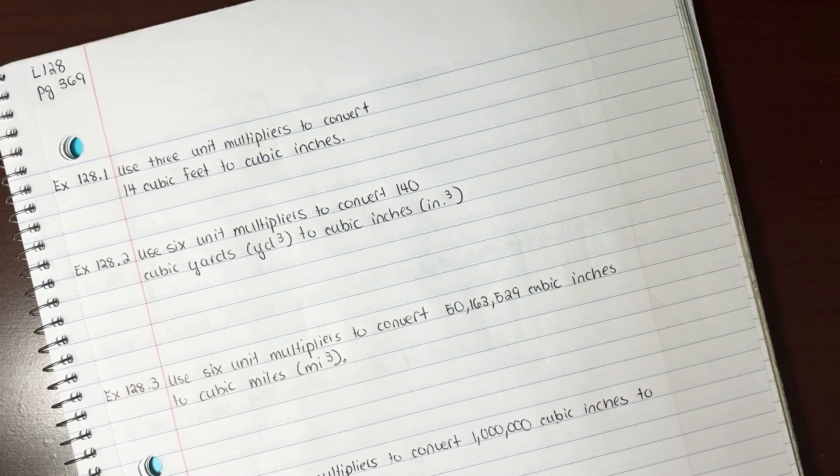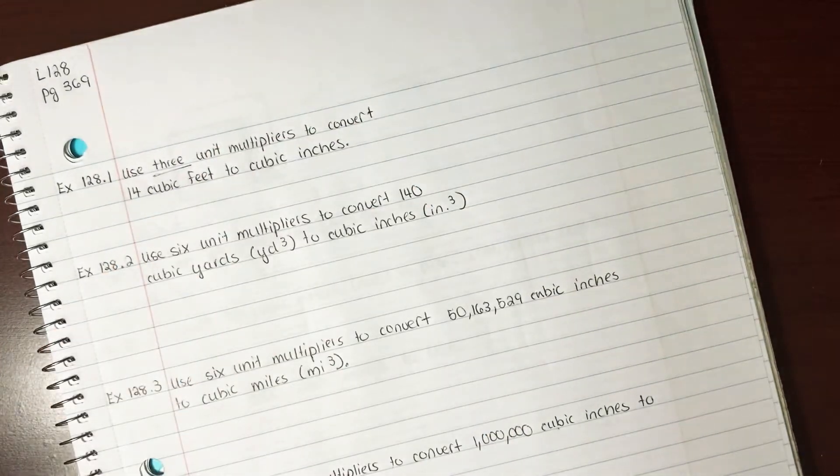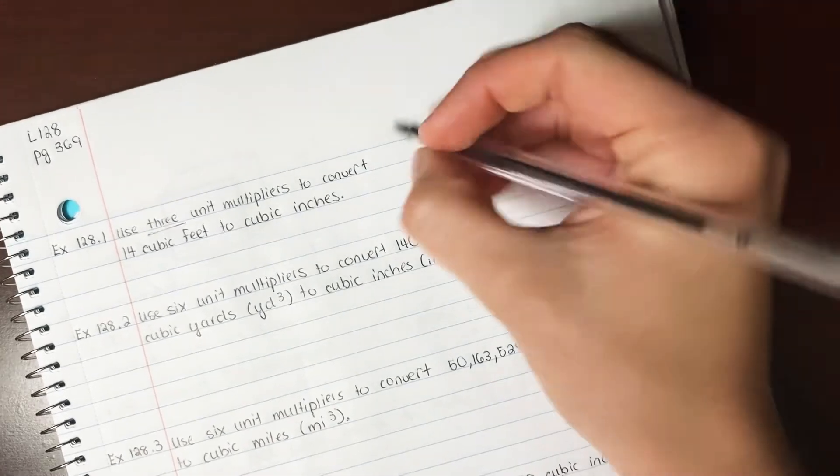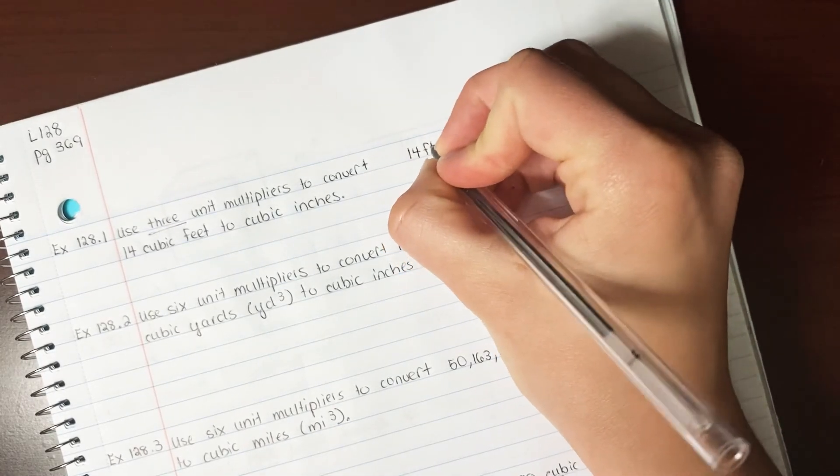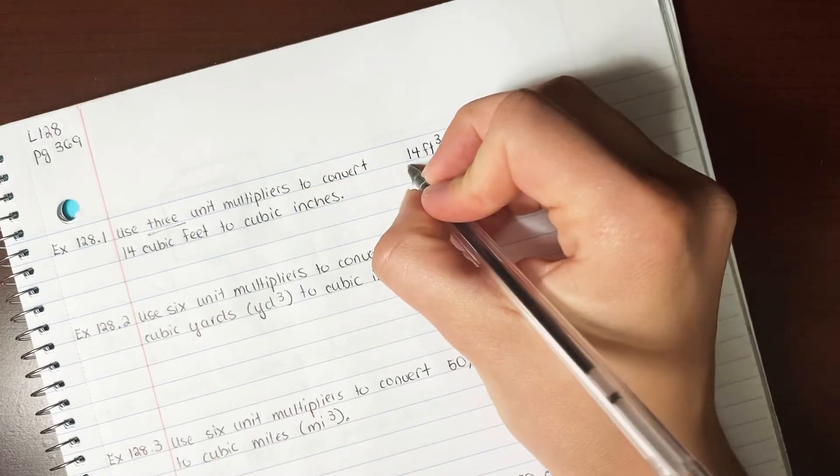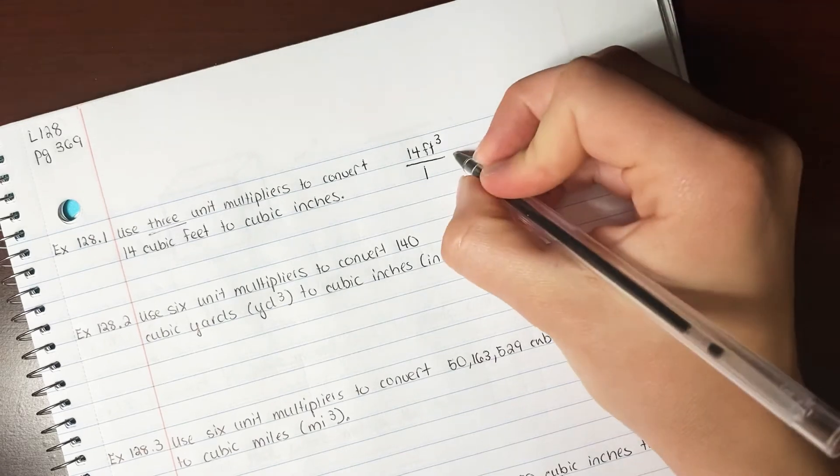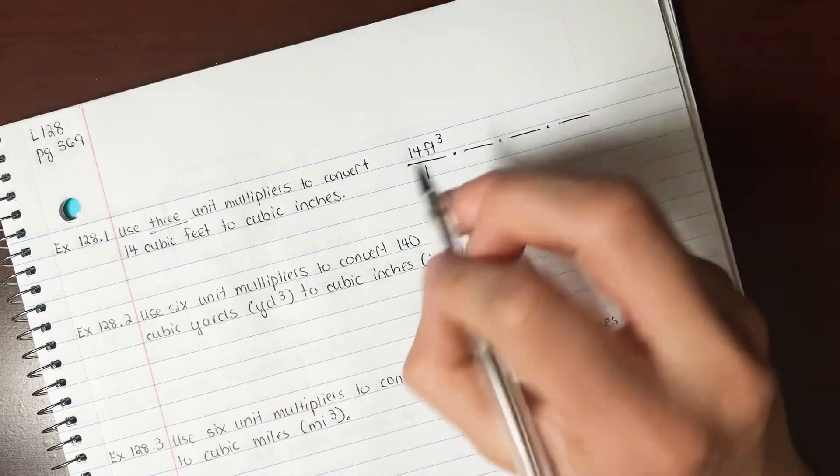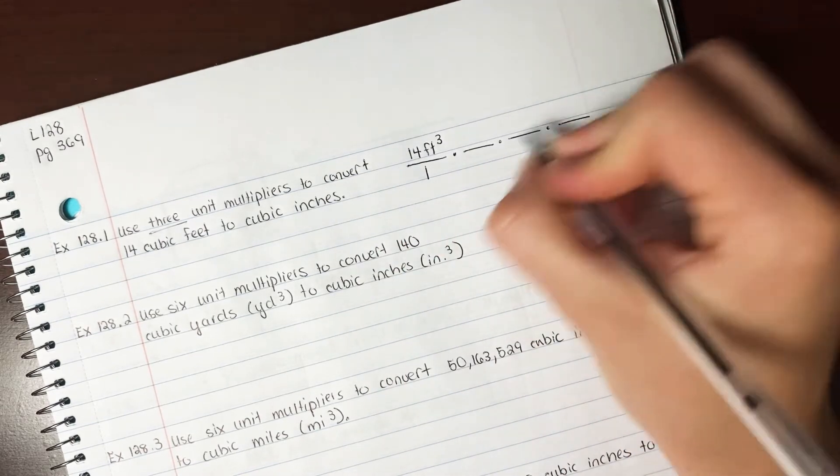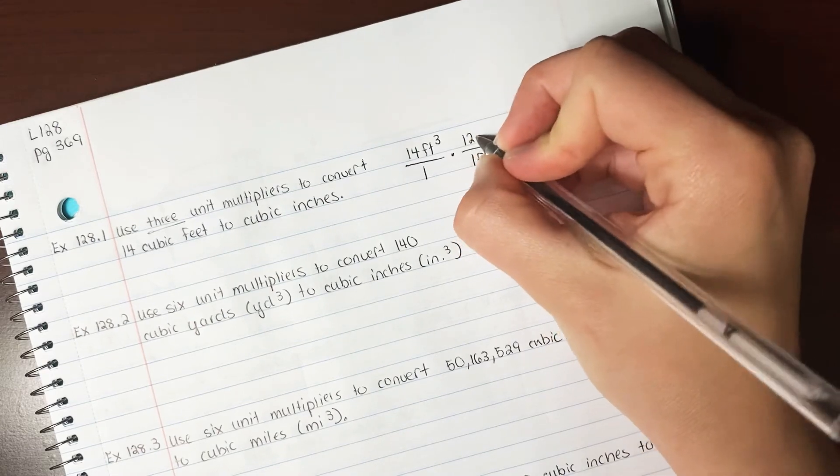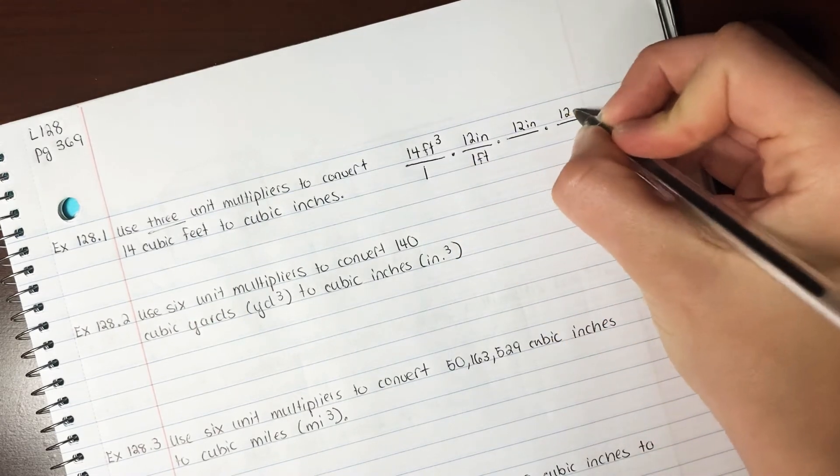Example 128.1, use three unit multipliers to convert 14 cubic feet to cubic inches. So we've got 14 feet cubed. We need to get that to inches, and we're going to use three unit multipliers. Remember, you put that over one. We're going to use one, two, three. If we're going to inches, then we need to have inches on top, and we need to cancel out our feet. So we're going to have one foot, which is equal to 12 inches, and we're going to have three of those.